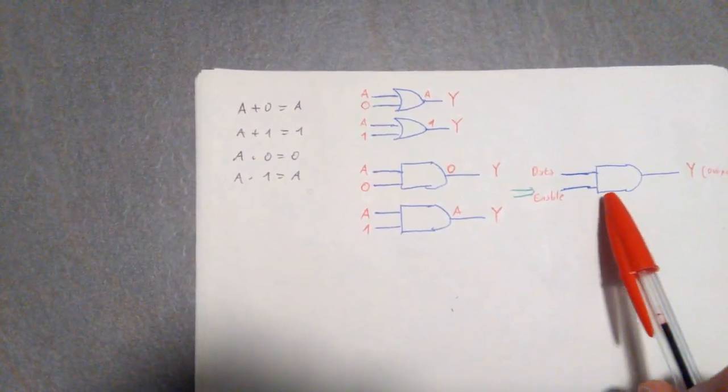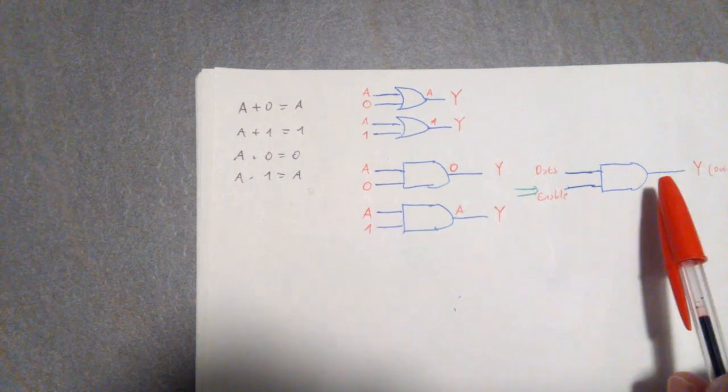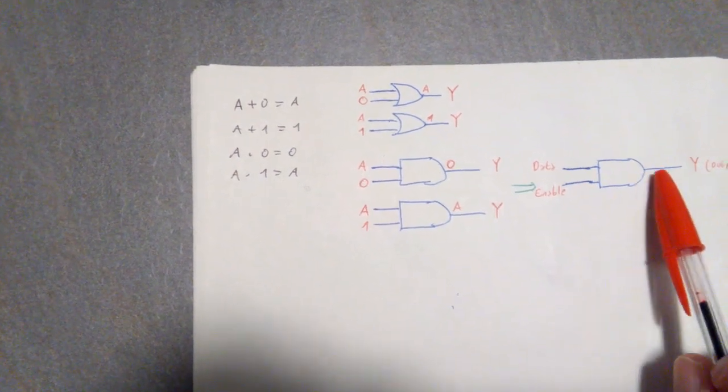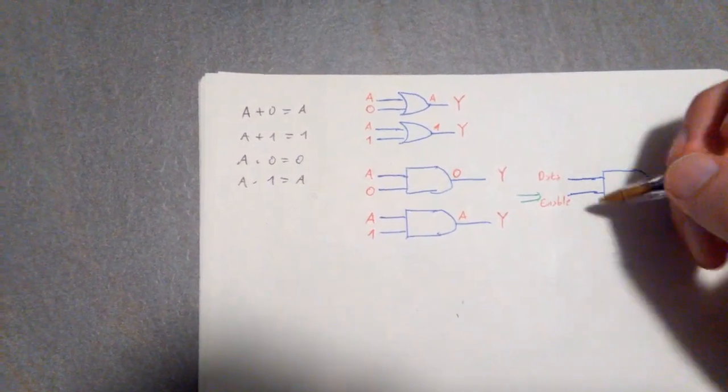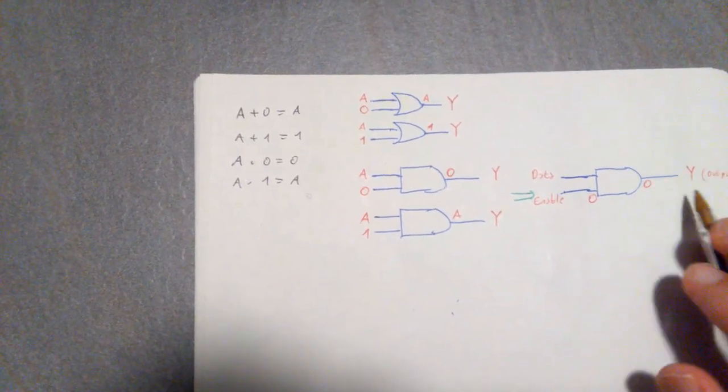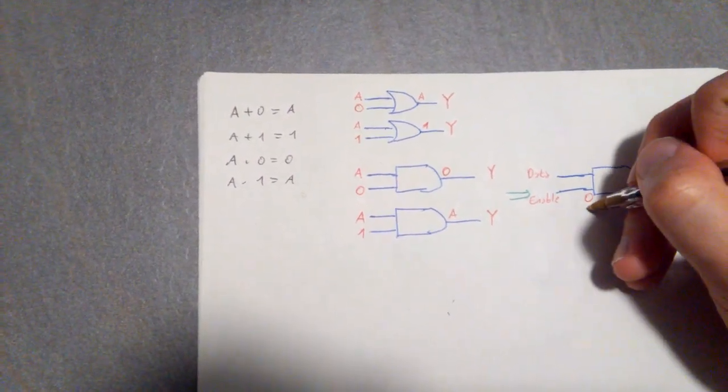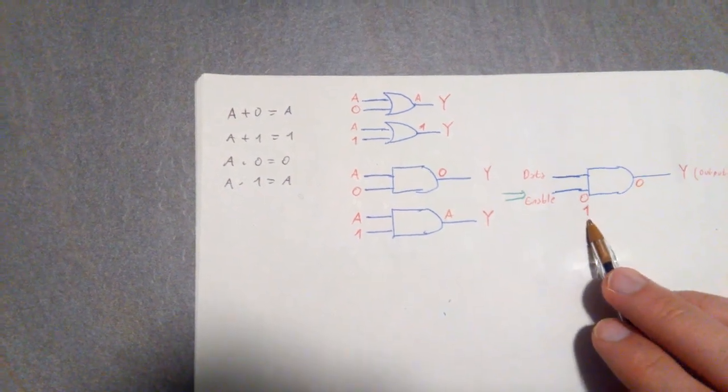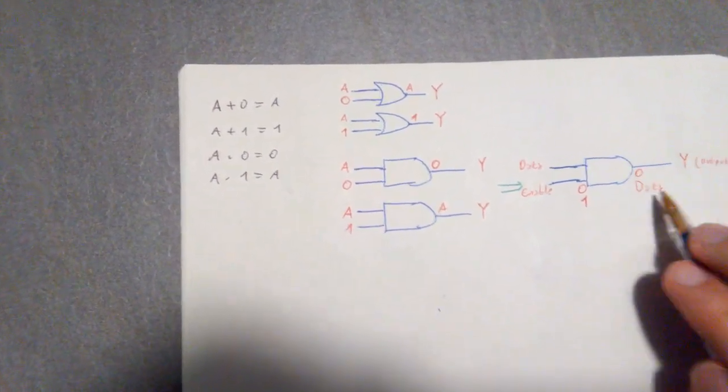If the enable line is 1, then the output is going to follow the data. So if the enable line is 0, the output is 0. If the enable line is 1, then the output is going to follow the data.